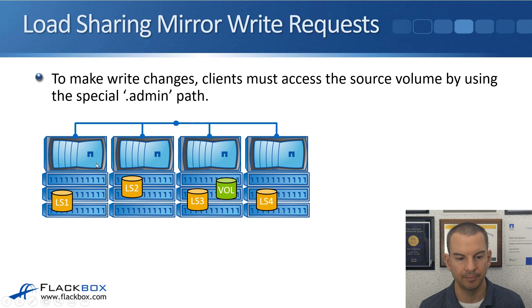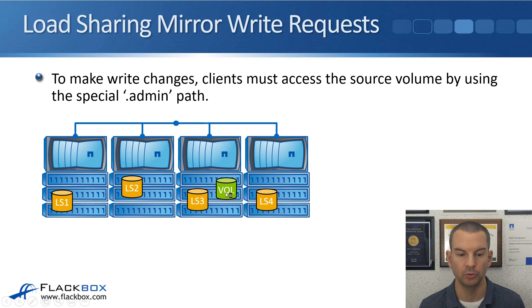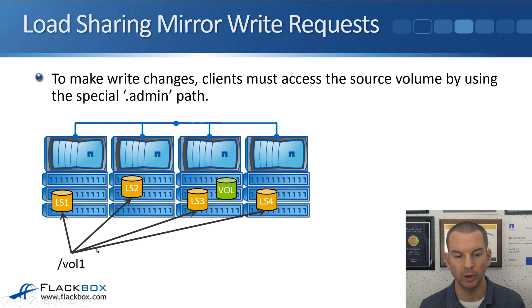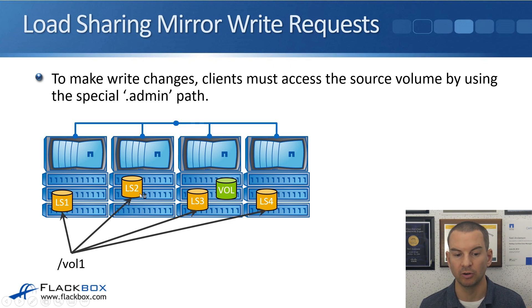Looking at this diagram, each box at the top represents a single node in a four-node cluster. The green volume is the source volume — the only writable copy. We create a load-sharing destination mirror copy of that volume on each node, including node 3 where the source volume is. For clients to access vol1, they map to /vol1. If a client connection is load balanced to node 1, the read request is serviced by the load-sharing mirror on node 1. Similarly for nodes 2, 3, and 4.